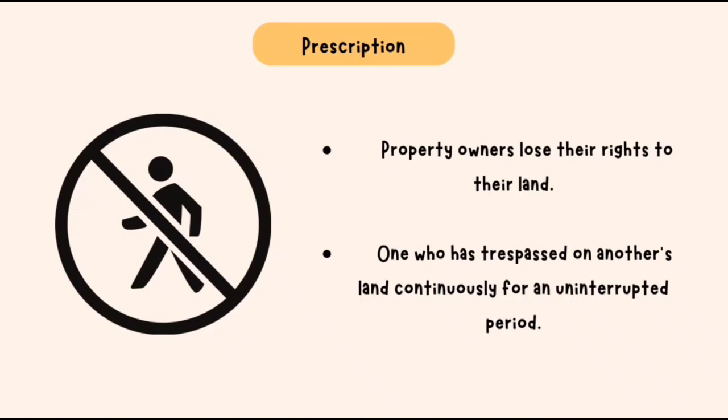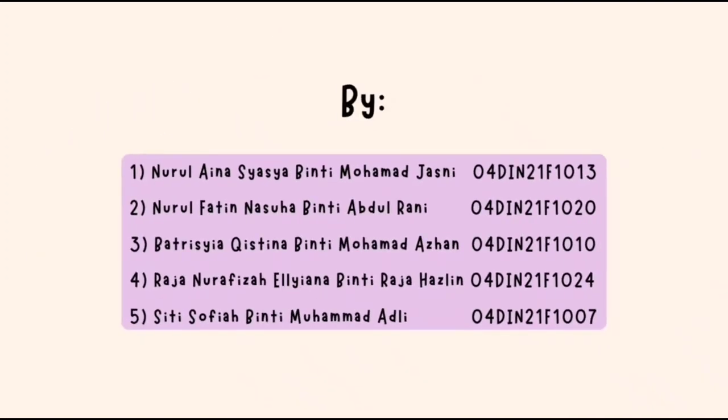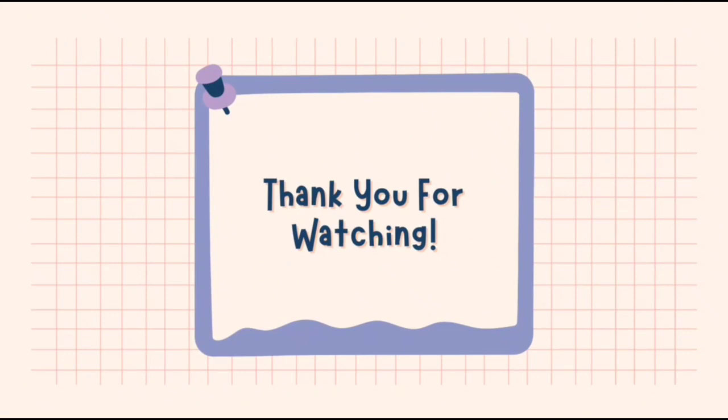Prescription: a property owner loses his right to his land when someone else sits on the land without disturbing him for a maximum period. The land owner cannot be evicted if there is no disturbance or encouragement. A person who has encroached on another person's land continuously for an uninterrupted period of not less than 20 years shall be deemed to have the right to occupy said land. Thank you for watching.